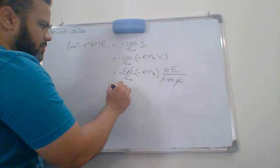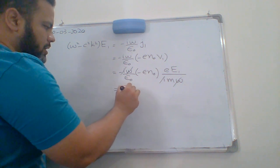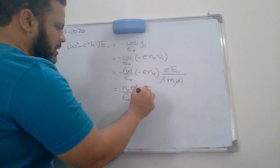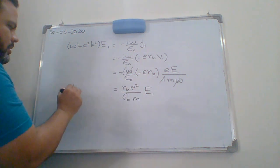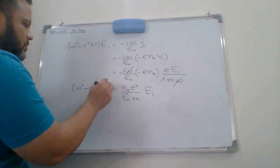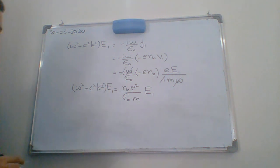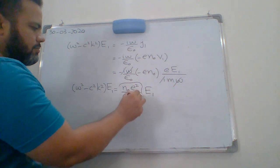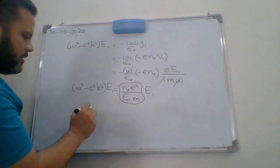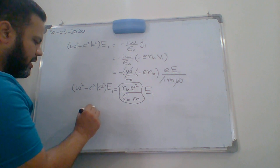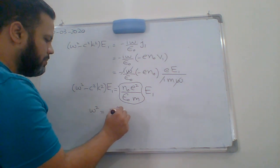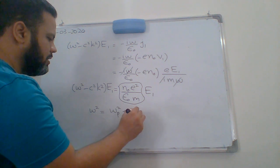Now, by simple cancelling iota iota omega omega minus minus plus, we have E squared n naught by epsilon naught M E1 on the right side, and on the left hand side we have omega squared minus C squared K squared E1. As you remember this term, this is the plasma frequency.